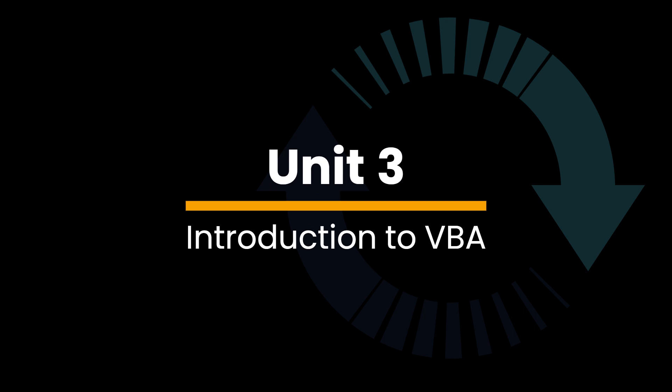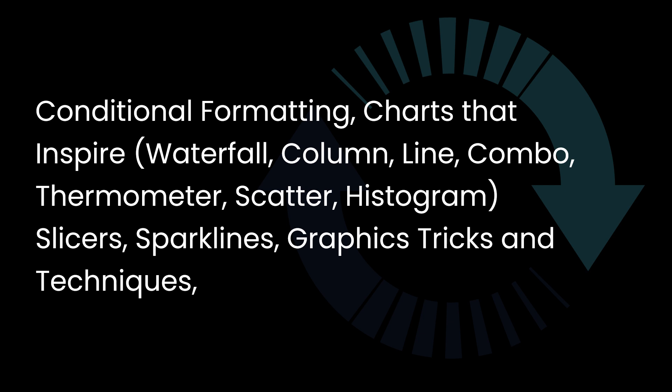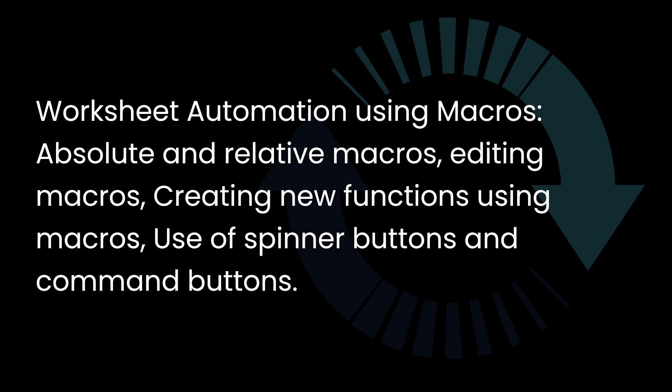Next is Unit 3: Introduction to VBA. Topics include Conditional Formatting, Charts that Inspire — Waterfall, Column, Line, Combo, Thermometer, Scatter, Histogram, Slices, and Sparklines — Graphics Tricks and Techniques, Worksheet Automation using Macros, Absolute and Relative Macros, Editing Macros, Creating New Functions using Macros, and Use of Spinner Buttons and Command Buttons.